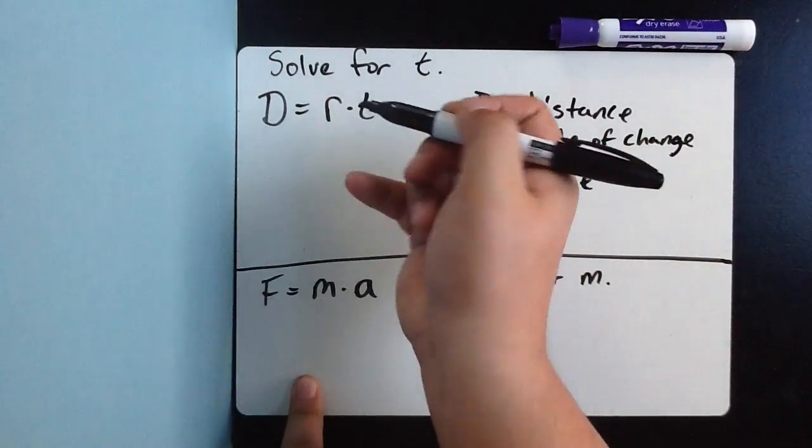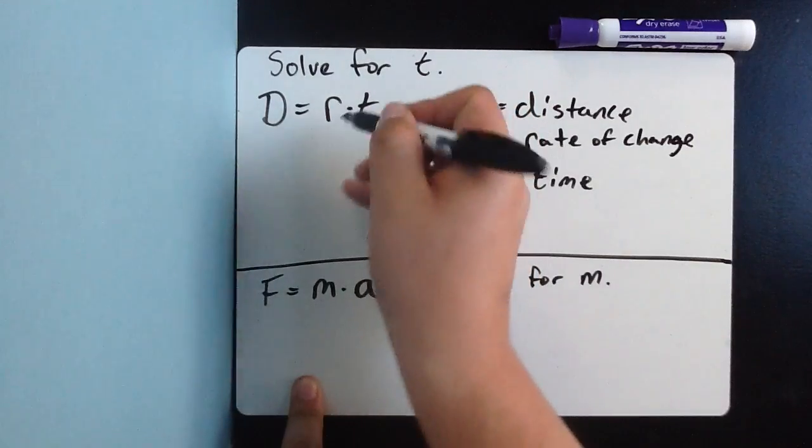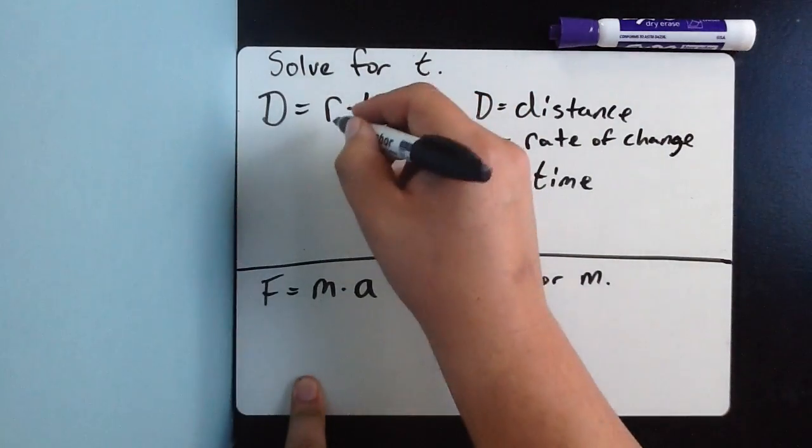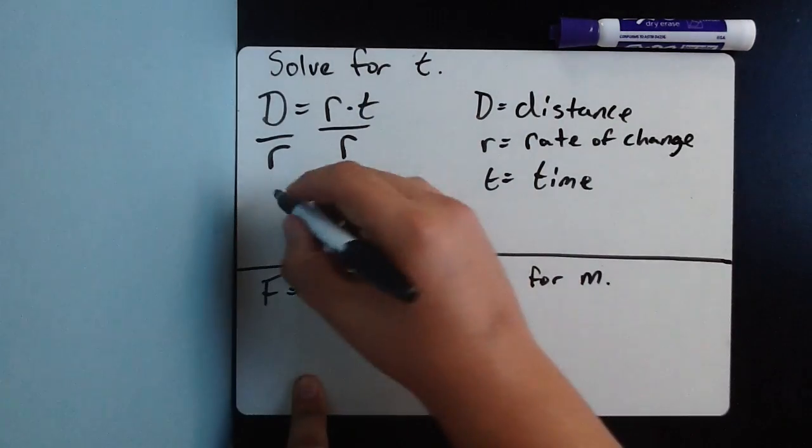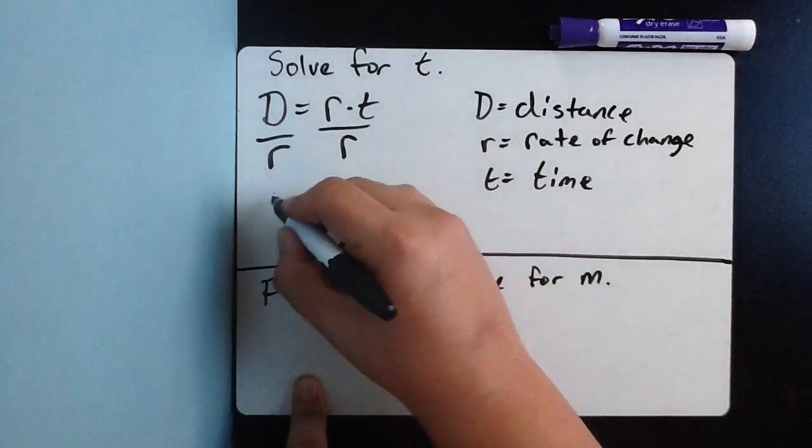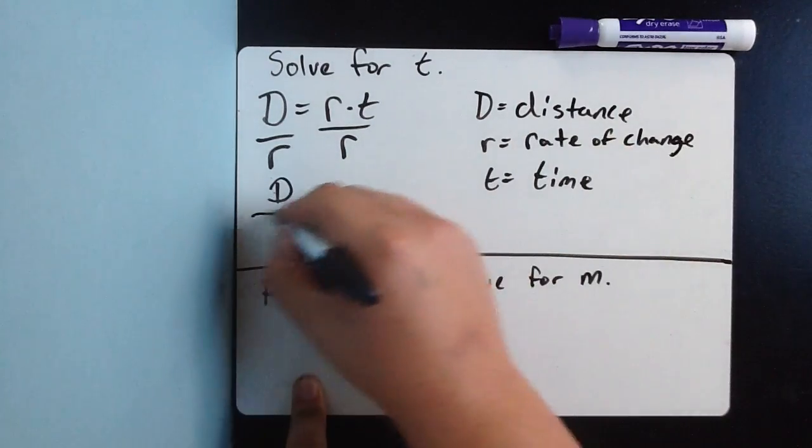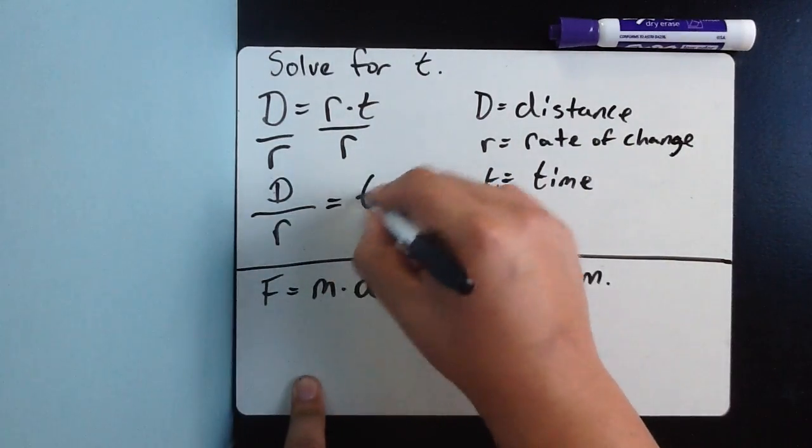So, I notice that t times the rate of change, they're multiplying. I'm going to undo that multiplication and divide both sides by r. My final answer is the distance divided by the rate of change is equal to time.